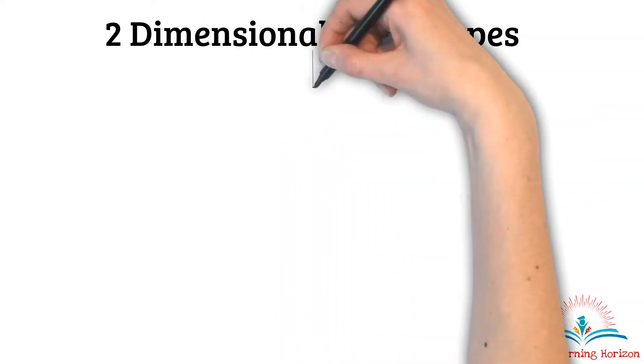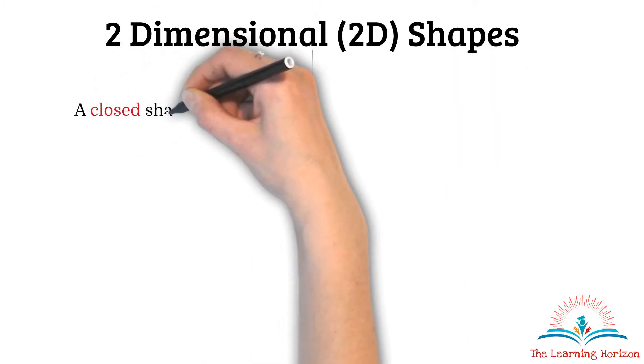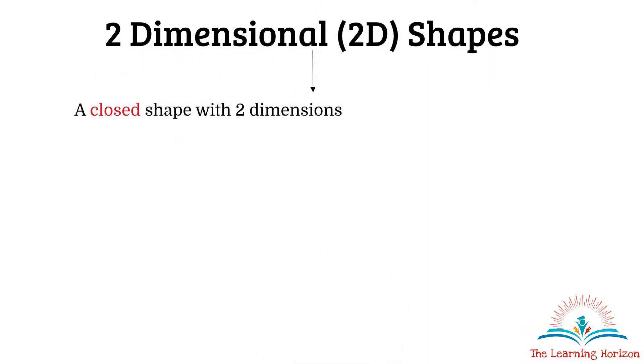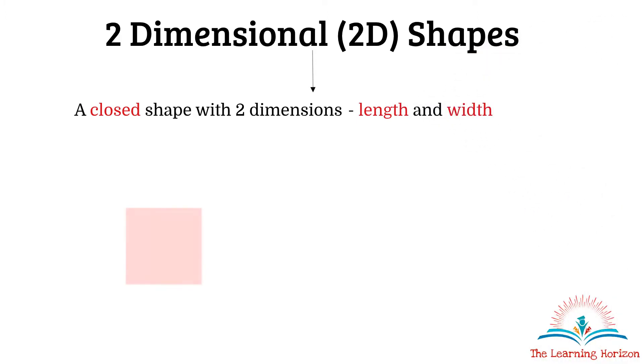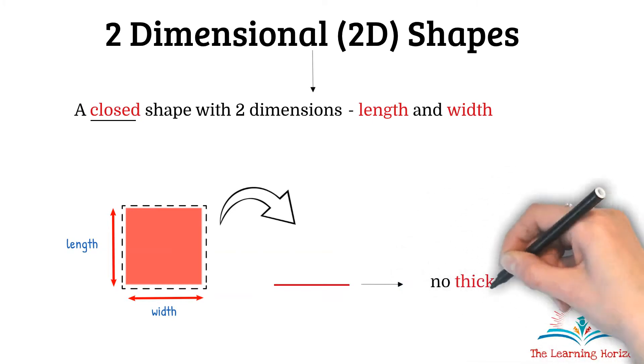A two-dimensional shape is a closed shape with only two dimensions, that is length and width. For example, a square. This square is closed. This square has length and it has width. These two-dimensional shapes lay flat on a surface because they do not have any thickness. So 2D shapes are also called flat shapes.